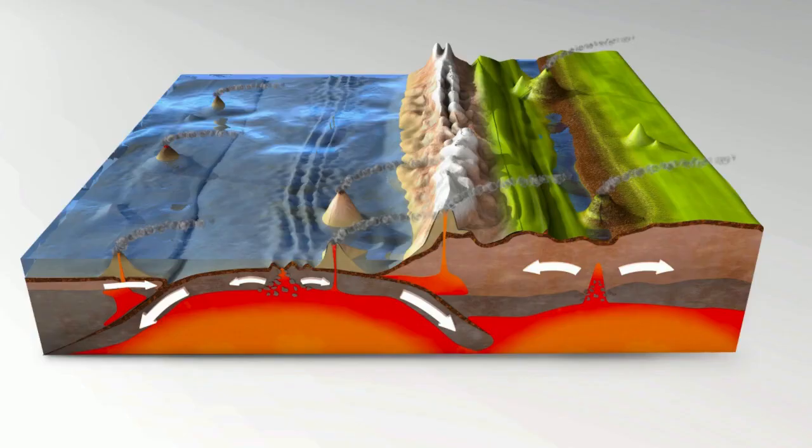Divergent boundaries, on the other hand, occur when two tectonic plates move away from each other. This separation can create tensional stress in the earth's crust, leading to the formation of new crust as magma rises to the surface, creating features like mid-ocean ridges. Divergent boundaries are like a pulling-apart motion.